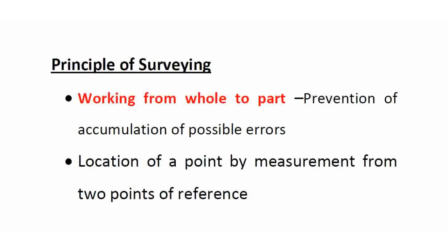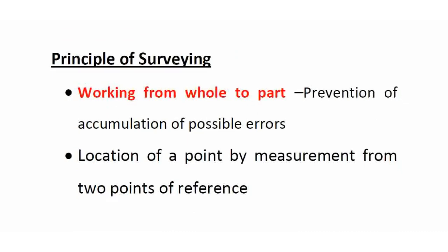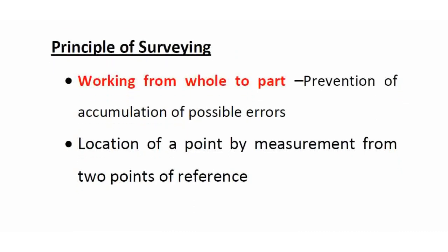The objective of working Whole to Part is prevention of accumulation of possible errors. Another principle of surveying is to locate a point by measurement from two points of reference — fixing two reference points to locate a new point.